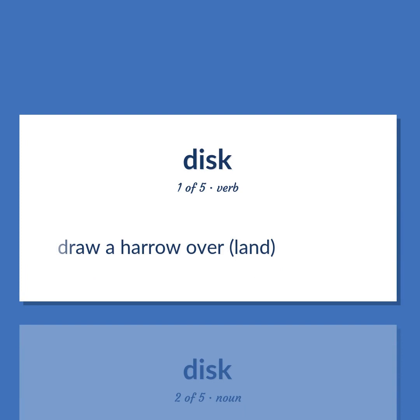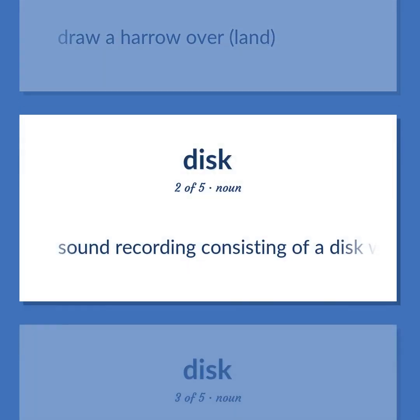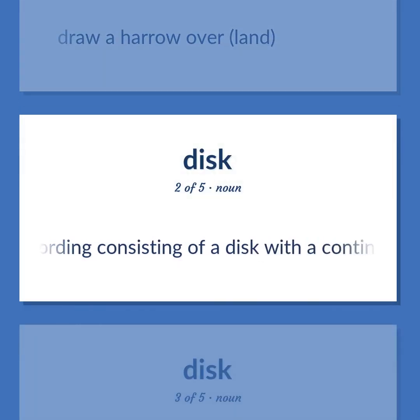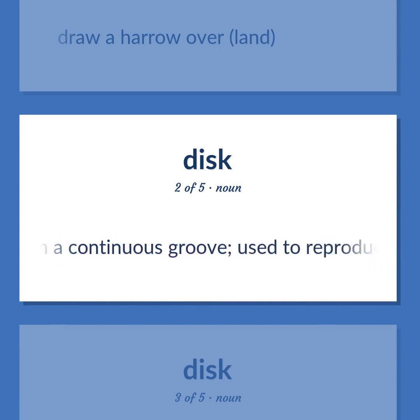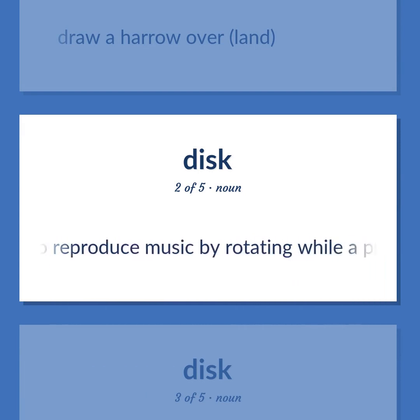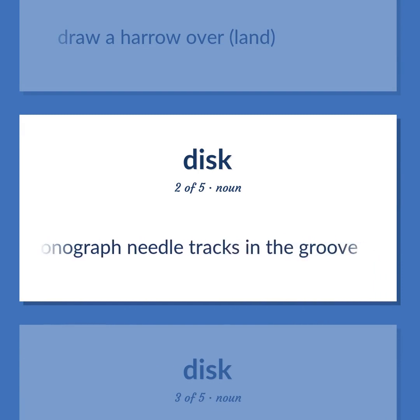Disc: To draw a harrow over land. A sound recording consisting of a disc with a continuous groove, used to reproduce music by rotating while a phonograph needle tracks in the groove.